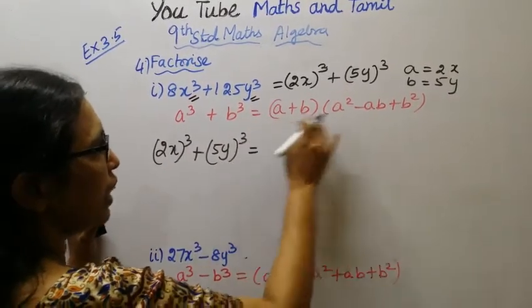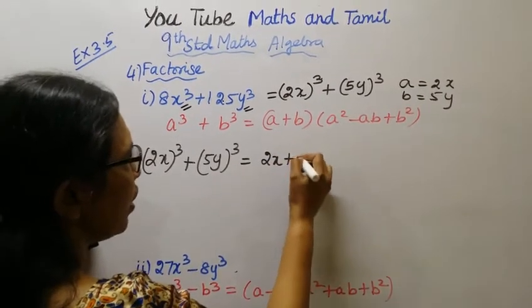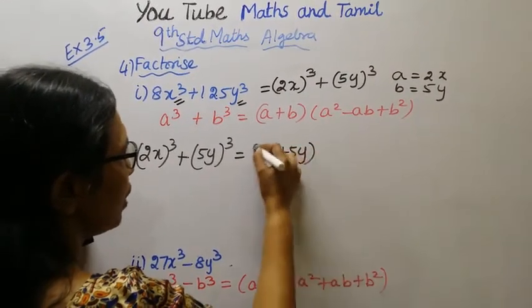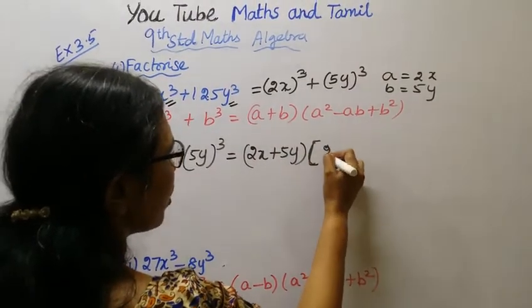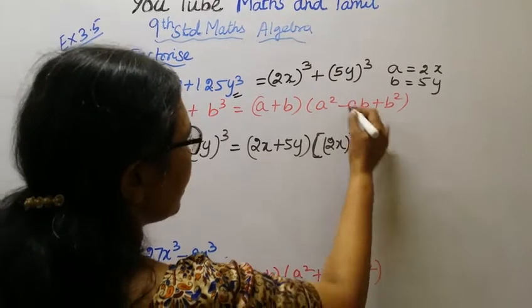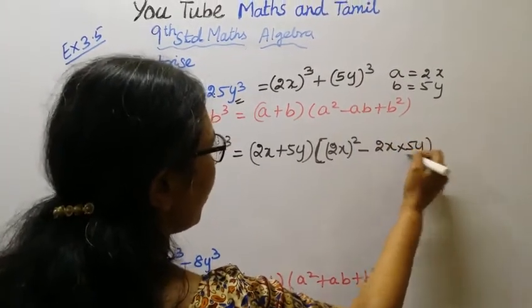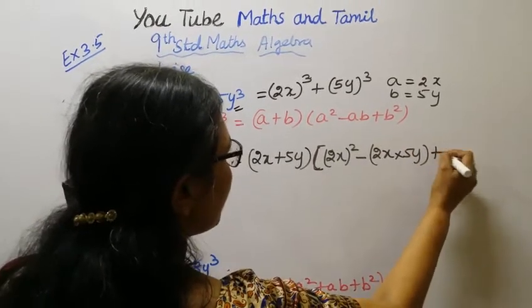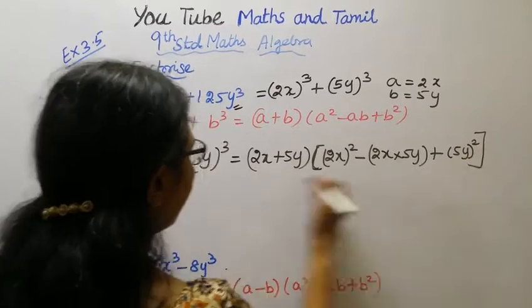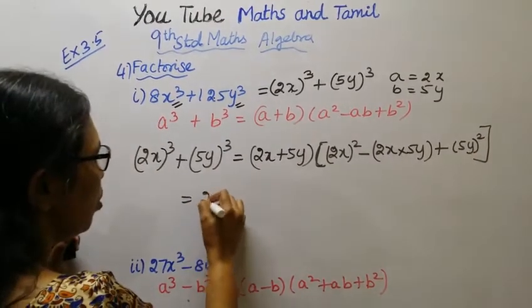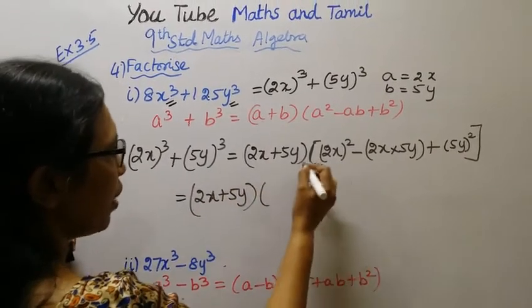...you're going to get the value of a³ + b³. It is equal to (2x + 5y), another bracket.